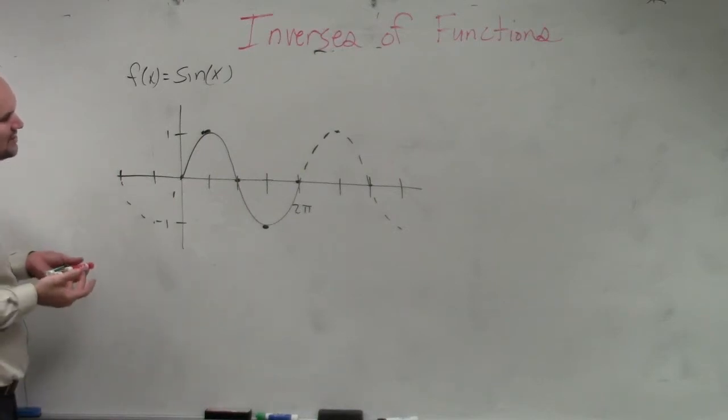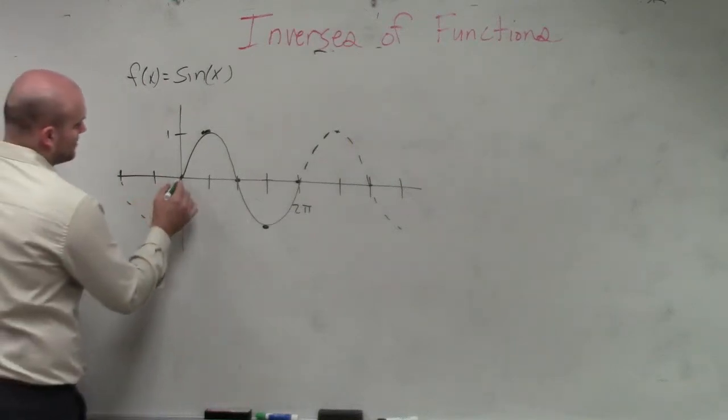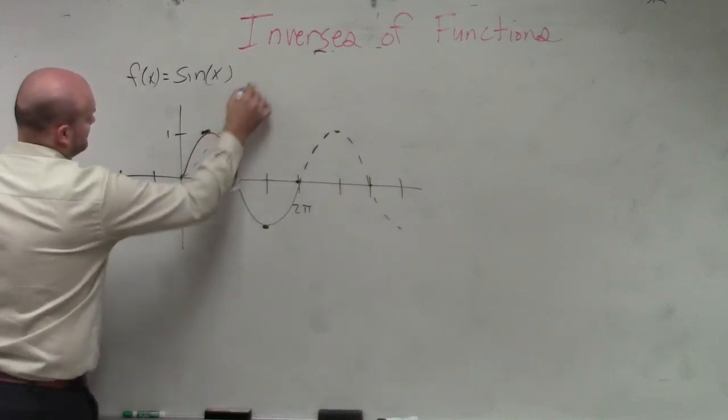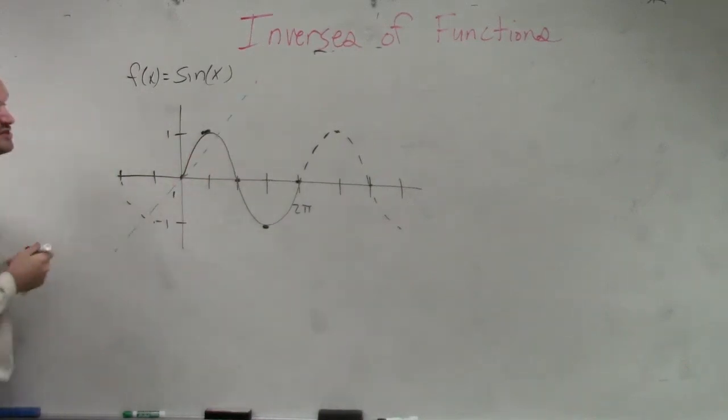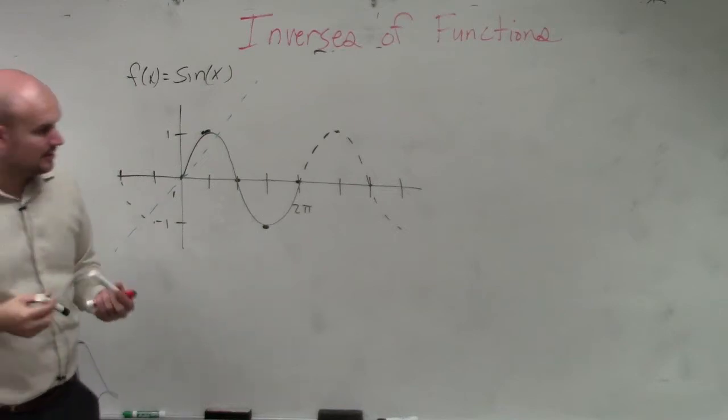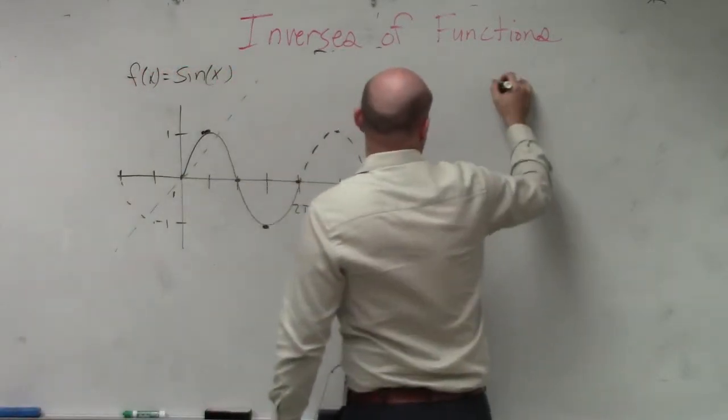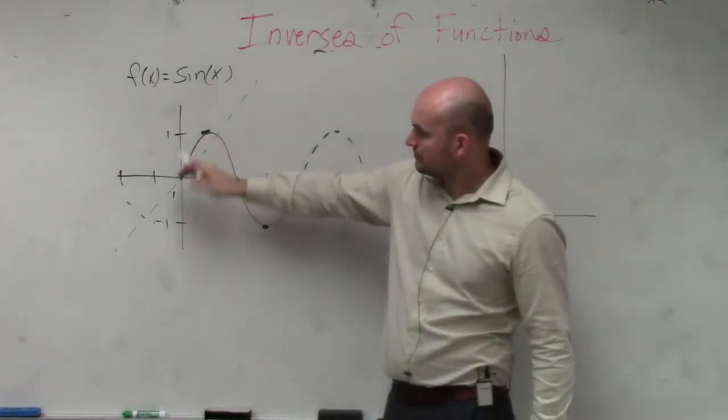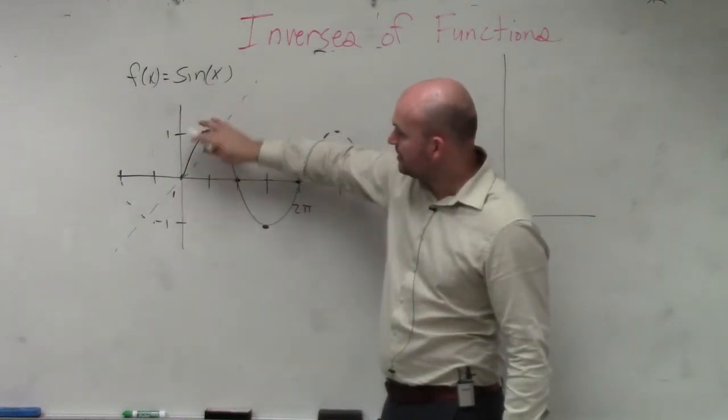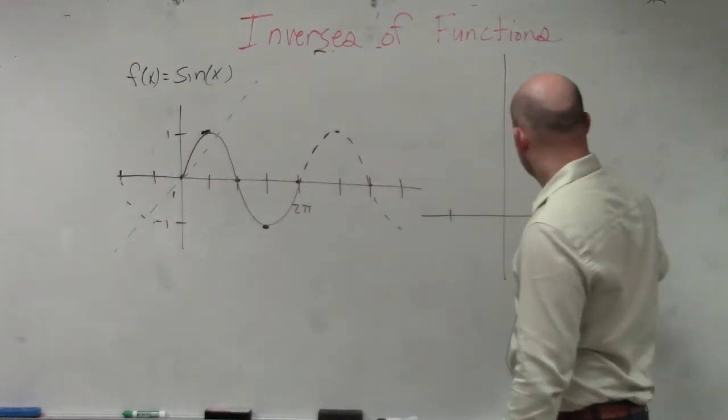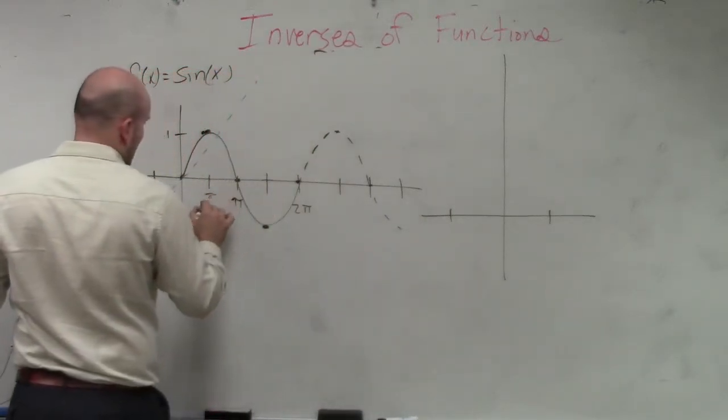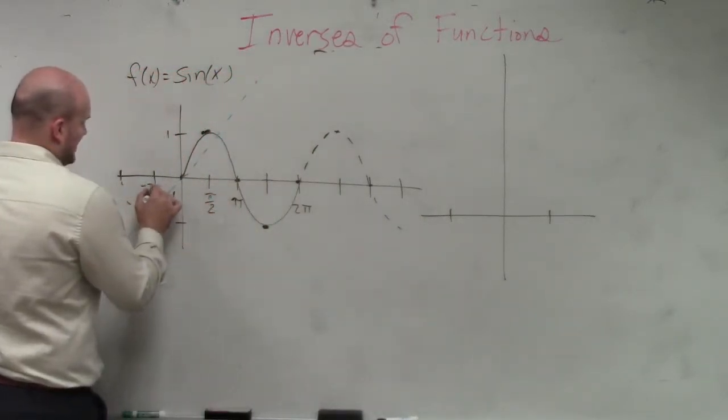So what I want you guys to understand, though, if we were going to graph the inverse of this, I would have to reflect it about the y equals x line. So if I was going to graph what the inverse would look like, it would look something like this. Now, basically what's happening is, the graph is going up. It's going to go as far wide as, if here's π, this would be π/2. This would be negative π/2.